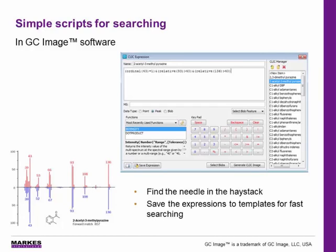To prevent needle-in-a-haystack type searches in these very complex data files, we use GC Image software to target key components. The software includes a simple scripting tool to search for target components based on their mass spectral or chromatographic features. For example, here we see the search expression used to find a pyrazine compound that is known to be responsible for a hazelnut aroma. The search was applied to the whole chromatogram and returned a hit in seconds, with the best match for this compound shown on the slide. These search expressions can be added to a template to make it quick and easy to search for target compounds across multiple samples, even when your chromatograms contain thousands of peaks.